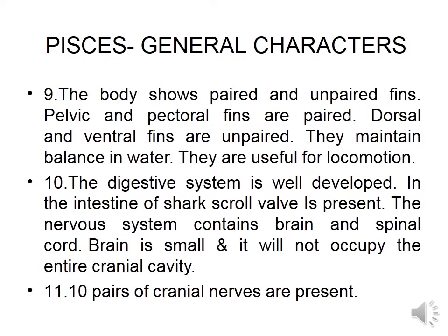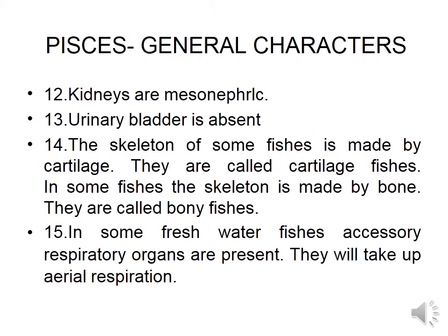The nervous system contains a brain and spinal cord. Cranial nerves are 10 in number. The brain is small and does not occupy the entire cranial cavity. Kidneys are mesonephric or opisthonephric, and excretion is ureotelic. Urinary bladder is absent in fishes. The skeleton of some fishes is made of cartilage — called cartilaginous fishes — while most are made of bone, called bony fishes. In some freshwater fishes, accessory respiratory organs are present for aerial respiration.